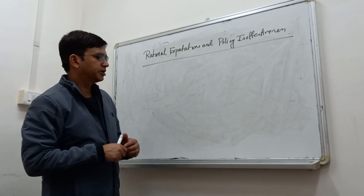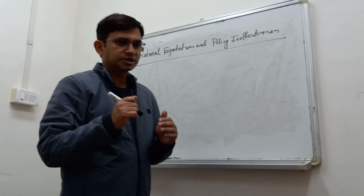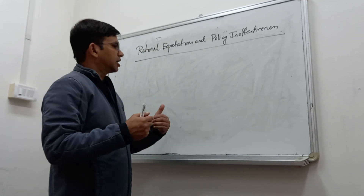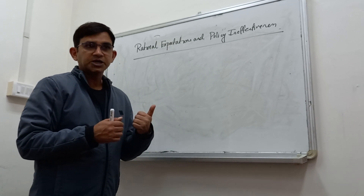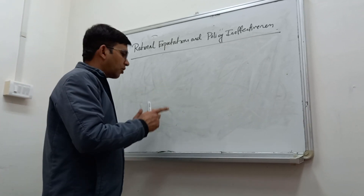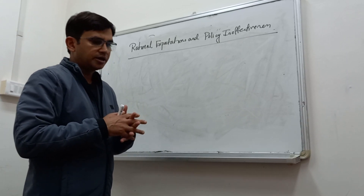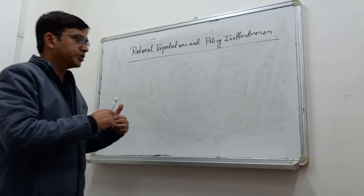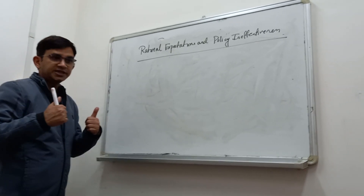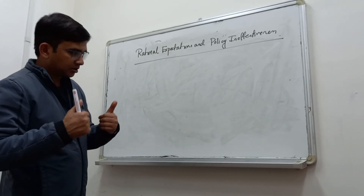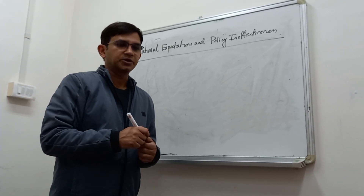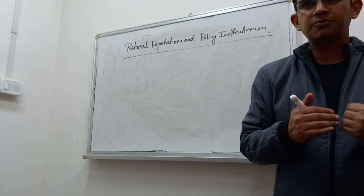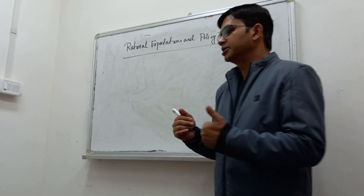In our last video we discussed rational expectations. We found that if people form their expectations rationally, then only a supply shock can create divergence from the natural level of output and employment. In this video we will discuss policy ineffectiveness under rational expectations, and find that if people can make proper predictions about government policies, those policies will be ineffective.